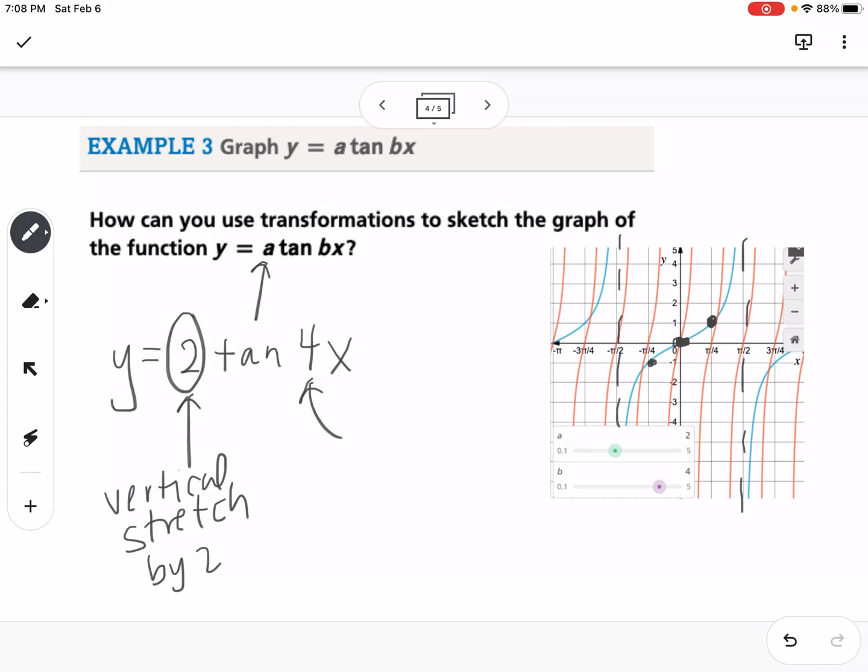The 4 is going to change the period of the graph. So just like with sine and cosine, instead of taking 2 pi over b, you would take pi over b, because the period of tangent is pi. So this would be pi over 4. So the period of our orange graph on here is going to be pi over 4. So you can see that really shrunk down – horizontally shrunk our graph, and we have a way higher frequency.